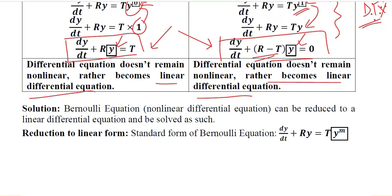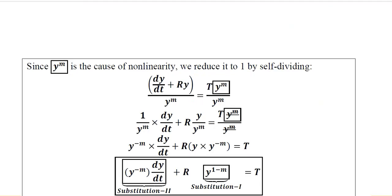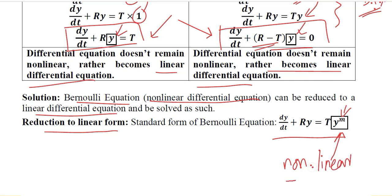So how can we solve it? The basic idea is that the Bernoulli equation is reduced to a linear form of the differential equation, and we are well familiar with how to solve the linear form. This is why we try to linearize it. It has a certain development: we are going to reduce it to the linear form, starting from the standard form. The term that causes trouble is y raised to the power m, which makes it nonlinear.